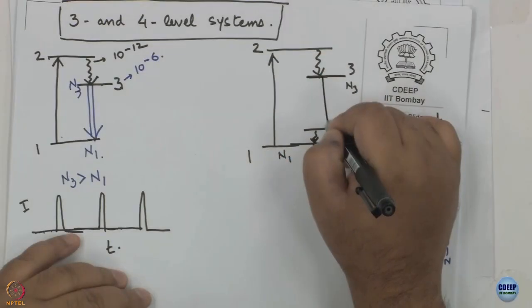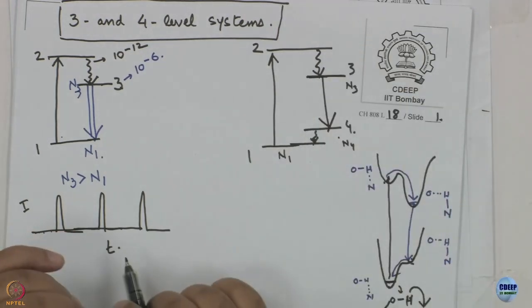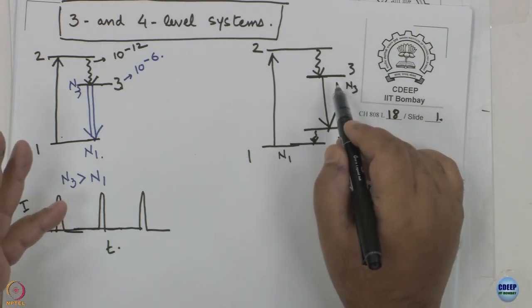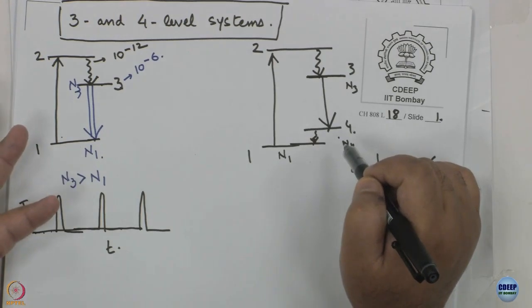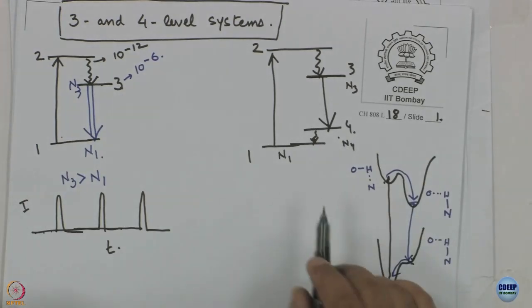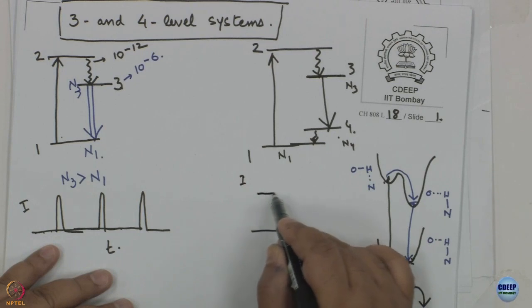This is important: if the rate constants are such that N4 is held near zero at all times, then population inversion is already achieved between level 3 and level 4 — because even if there are only two molecules in N3, population of level 4 is zero. So in this case, you get a continuous output (apart from an initial induction time).